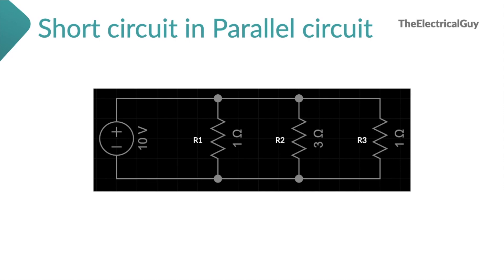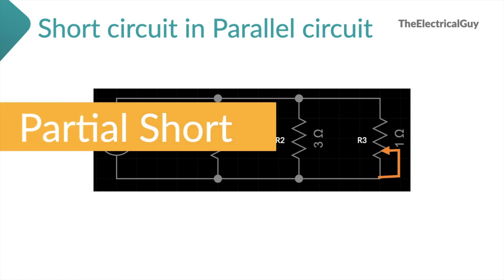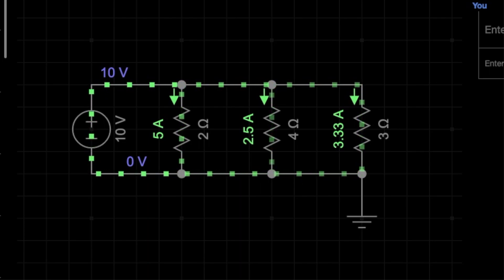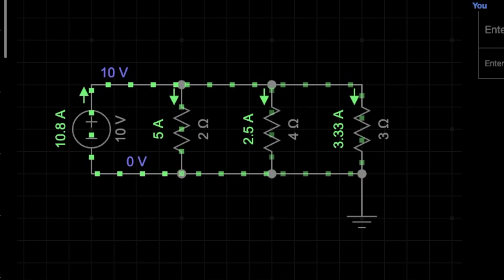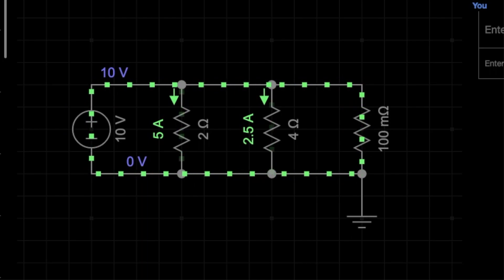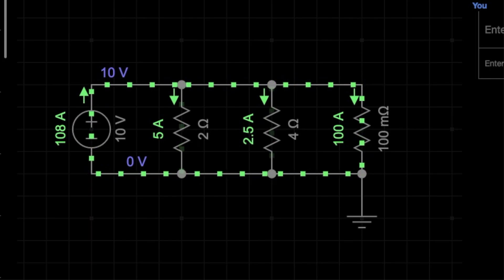Now let's consider a parallel circuit. If there is a short in one branch, the total resistance of the circuit will decrease. As a result, total current of the circuit will increase and become much higher than normal. More current will flow through the shorted branch since its resistance is very low. For example, in a parallel circuit with normal current of 10.8 amperes, a short in the 3 ohms resistance branch causes the resistance to drop and the current rises to 108 amperes — which is huge. This is a partial short.